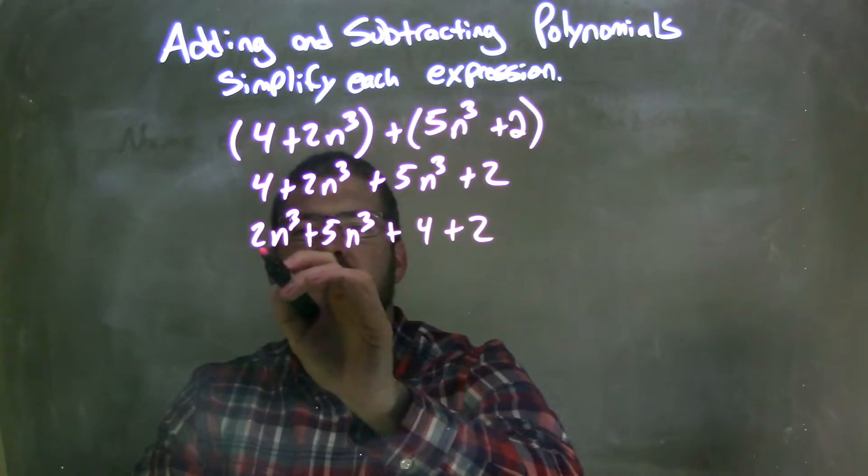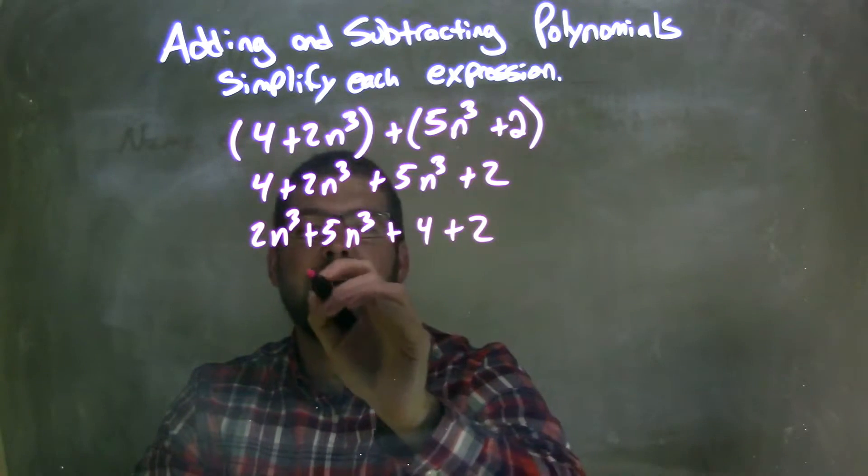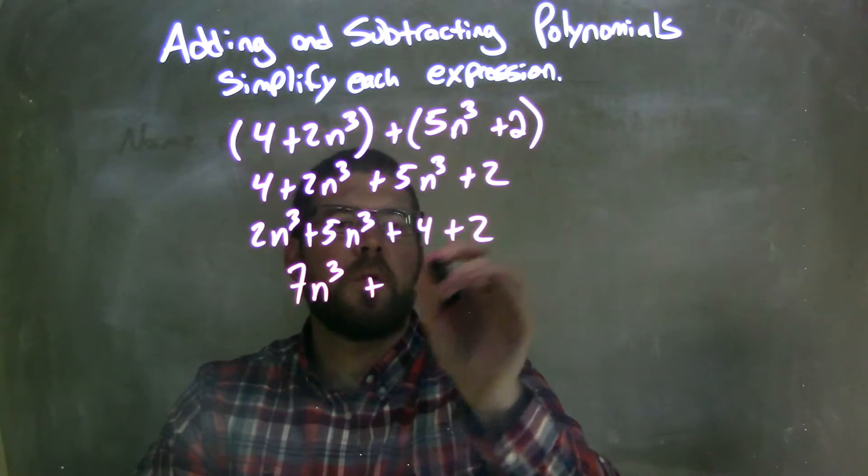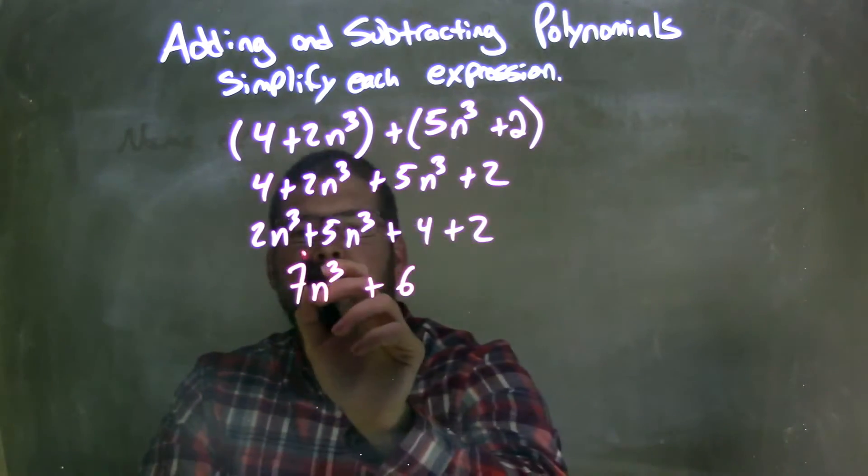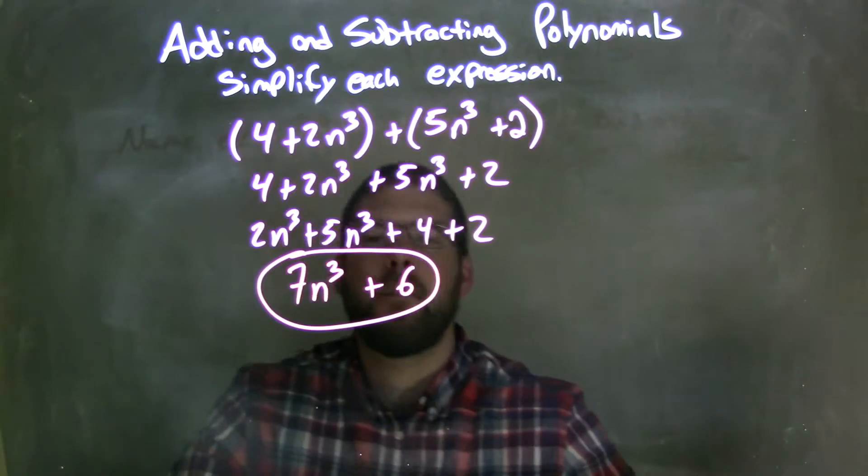So now let's add our like terms. 2n to the 3rd plus 5n to the 3rd comes out to be 7n to the 3rd. And 4 plus 2 is 6. And there we have it. We have our final answer. Simplify here. 7n to the 3rd plus 6.